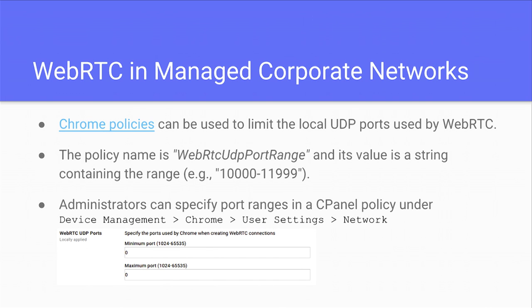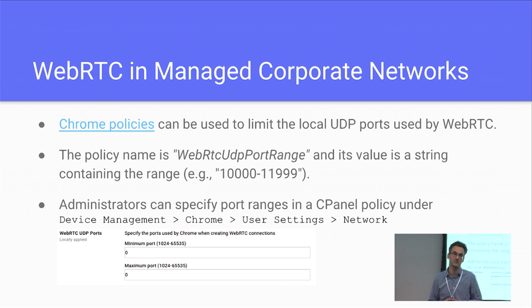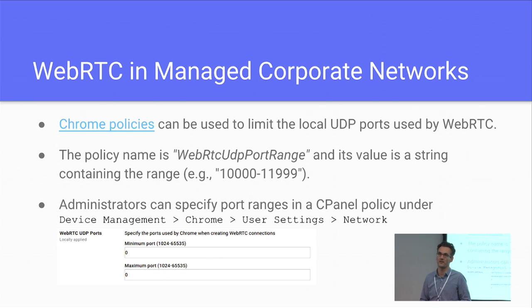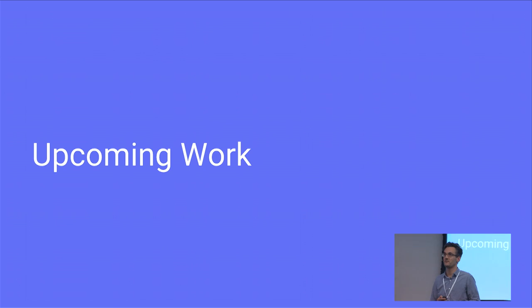Not all administrators are happy to open up all the network, especially in enterprise environments where UDP is blocked or limited to specific ports. What has just been enabled is a Chrome policy in which you can define a port range and limit it to a specific range that the administrator has opened in the firewall. The team is working on bringing this into cPanel to roll out into managed corporate networks.